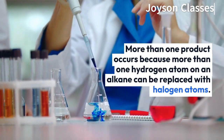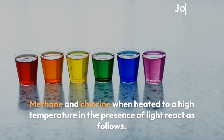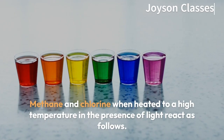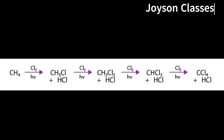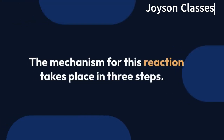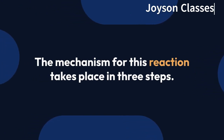Methane and chlorine, when heated to a high temperature in the presence of light, react as follows. The mechanism for this reaction takes place in three steps.